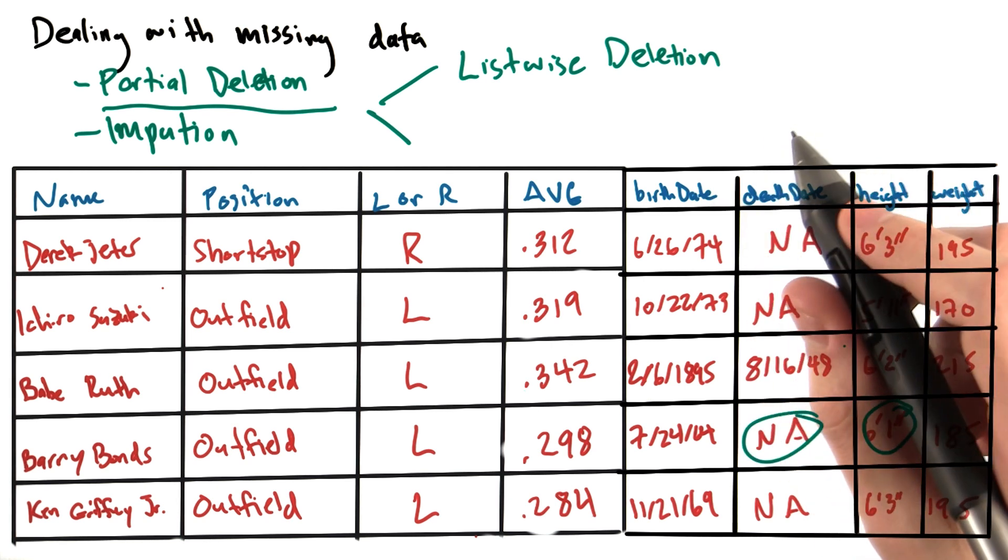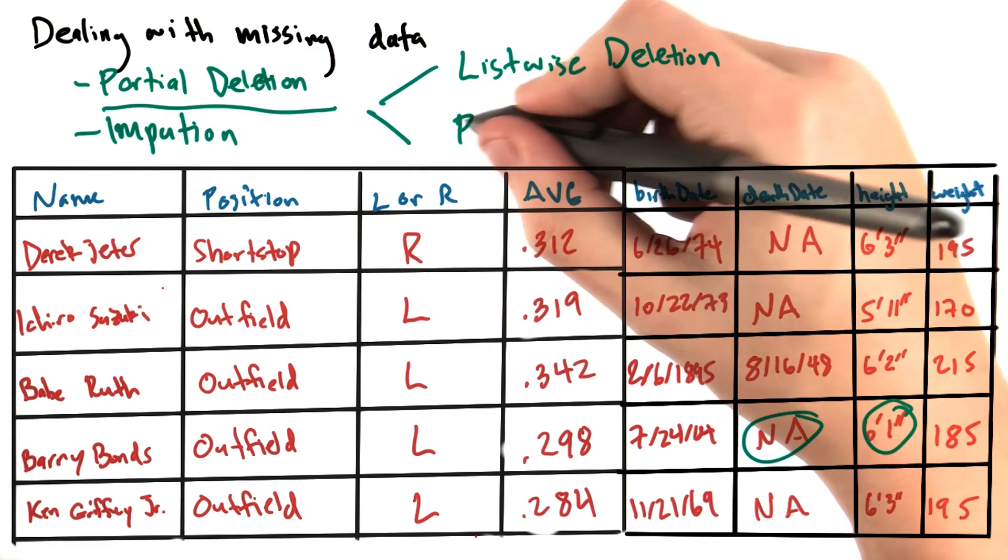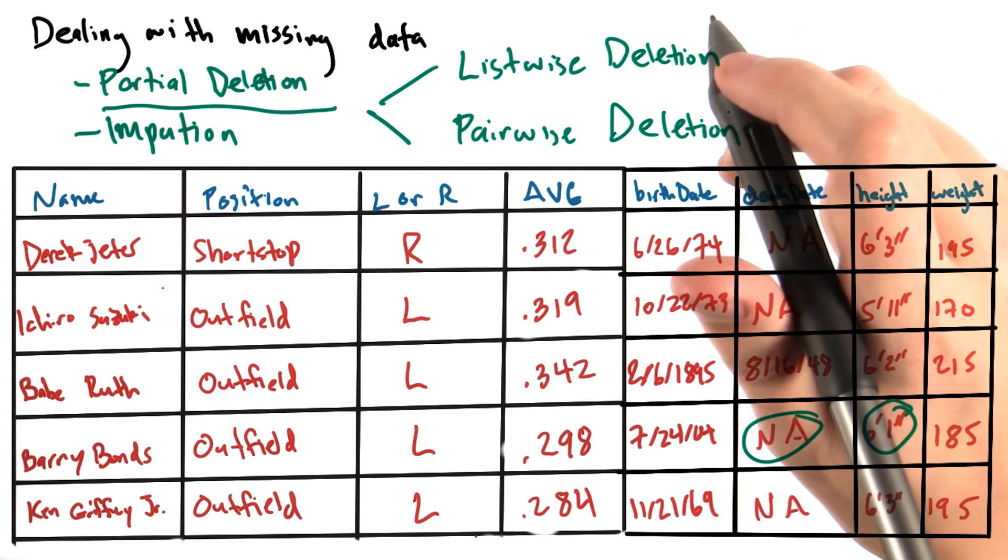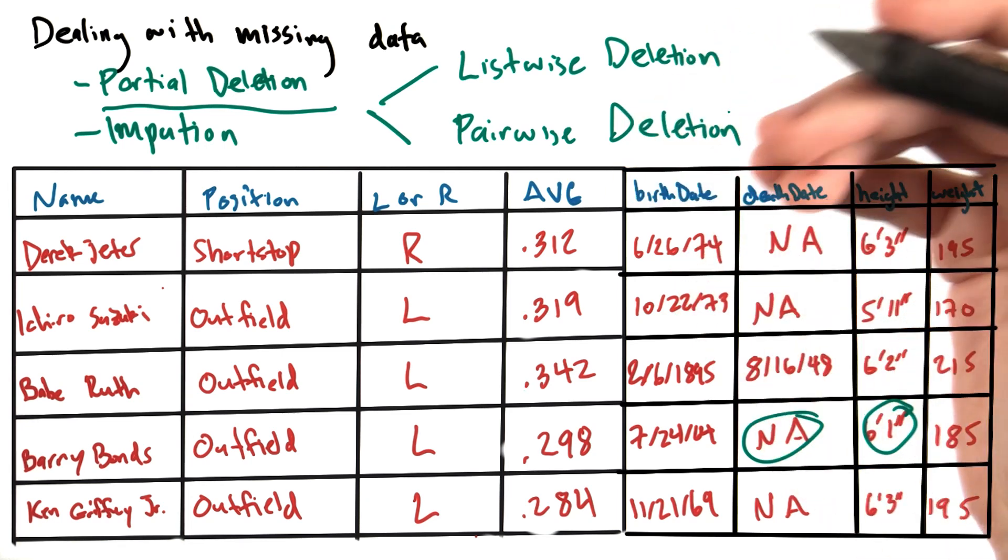On the other hand, in the case where we might perform pairwise deletion, we would exclude a particular case from the analysis for tasks which are not possible with the data at hand.